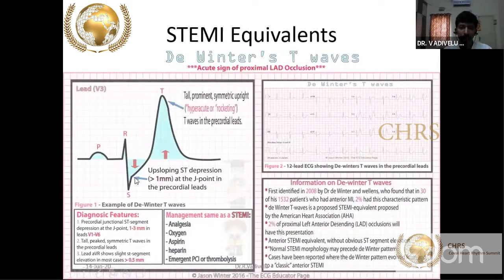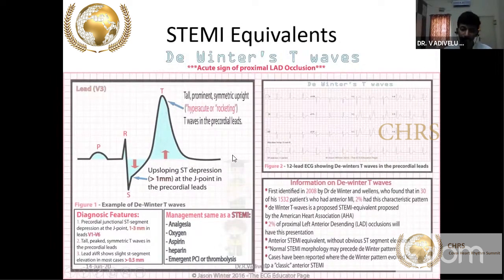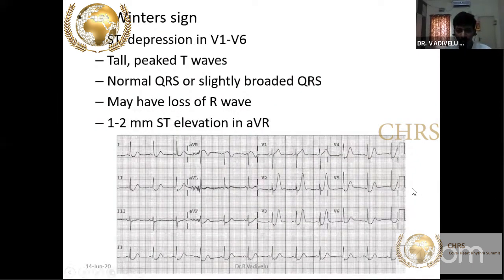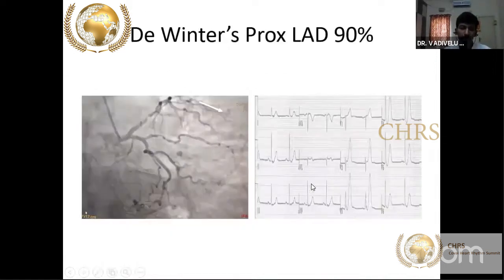De Winter described a pattern with J point depression and upsloping ST segment depression of more than 1 mm, along with a hyperacute or rocket-like T wave — this is De Winter sign. It is very classical of LAD occlusion. You can see this in V2 to V3 — J point or ST segment depression with an upsloping pattern and hyperacute T wave.